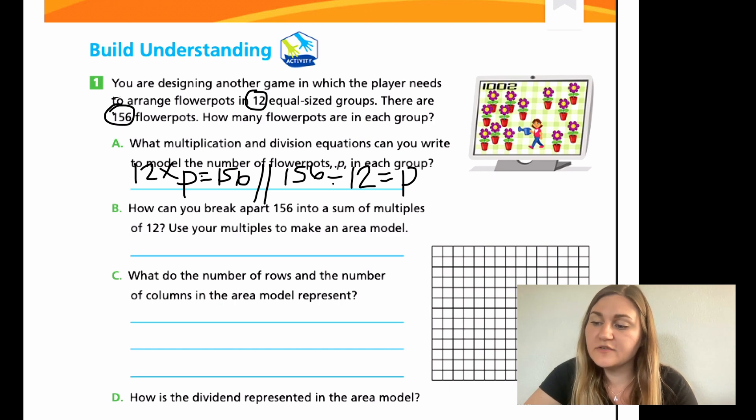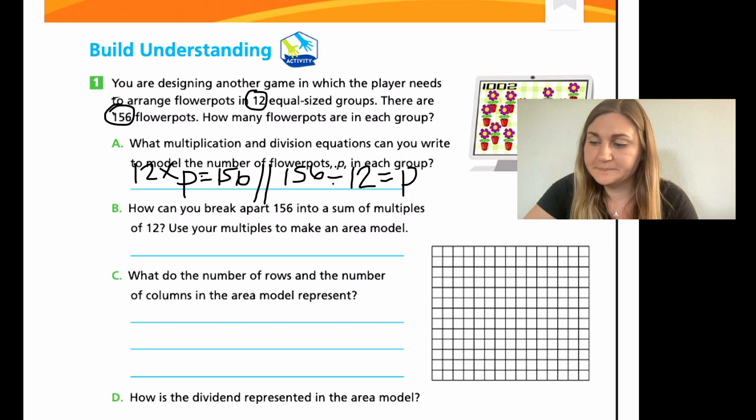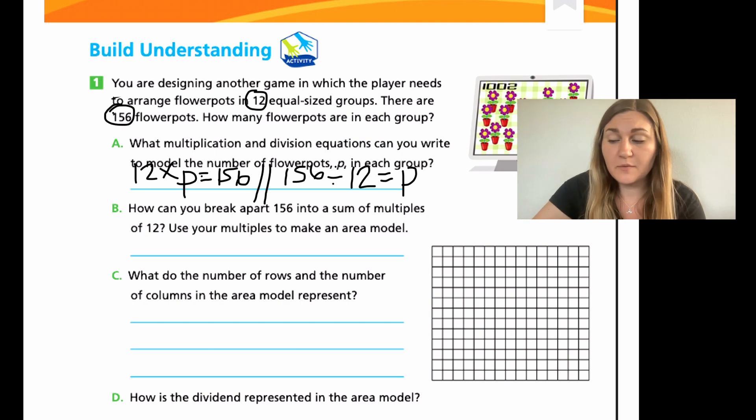So, B says, how can you break apart 156 into a sum of multiples of 12? Use your multiples to make an area model. So, we're going to be using that grid over to the right. And then C says, what do the number of rows and the number of columns in the area model represent? So, what I want you to do is figure out how many groups of 12 you can make from 156. And then tell me what your rows and your columns represent. So, I want you to do B and C. Attempt those now.